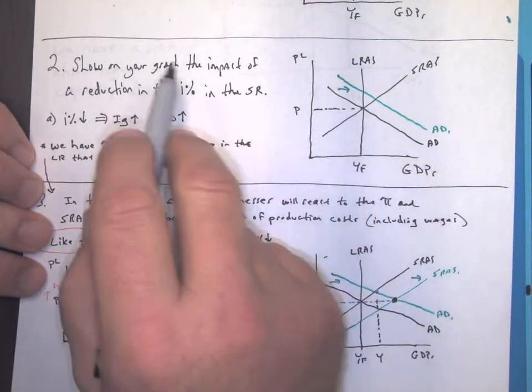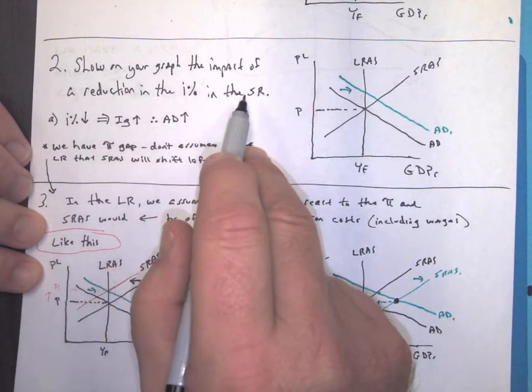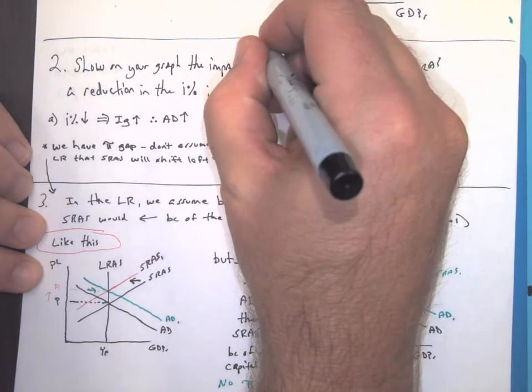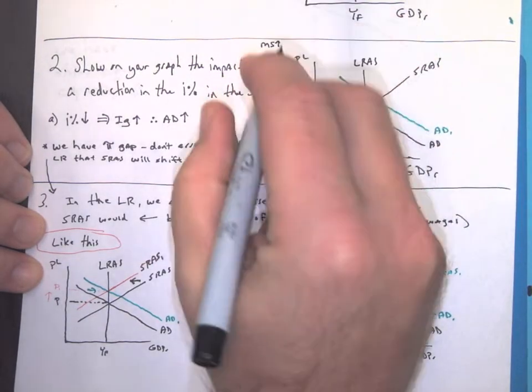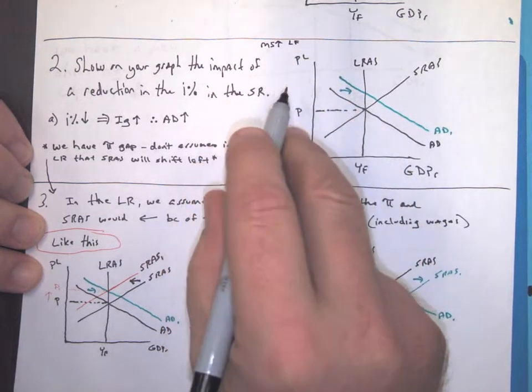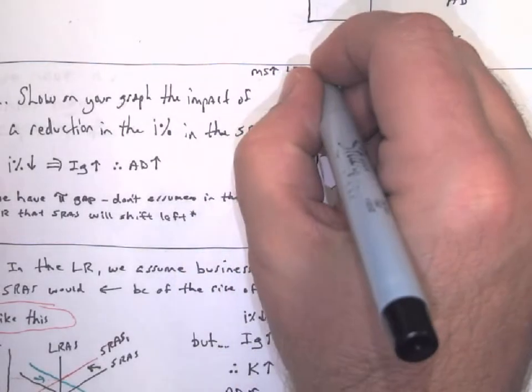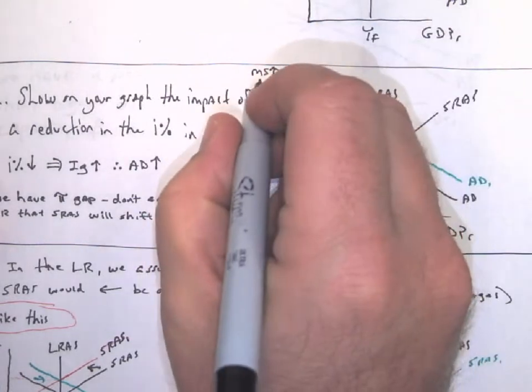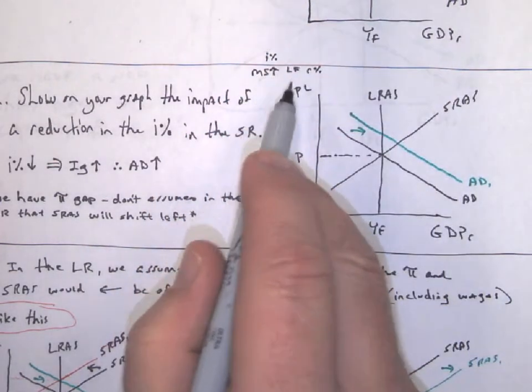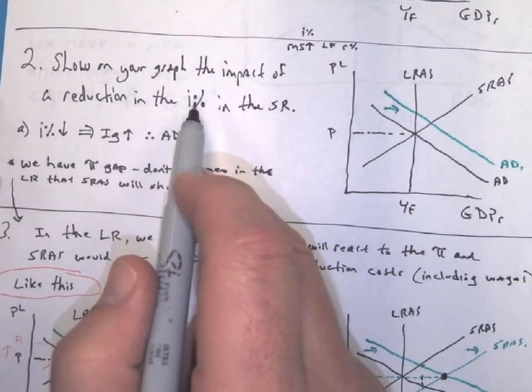Now that you've got that drawn up, let's show on your graph the impact of a reduction in the interest rate in the short run. So that can be by the money supply increasing or the loanable funds market having changes. Remember, the loanable funds market is going to alter the real interest rate, and the money supply is going to affect the nominal interest rate. So those things are examples of what can happen of something that's going to lower the interest rate.